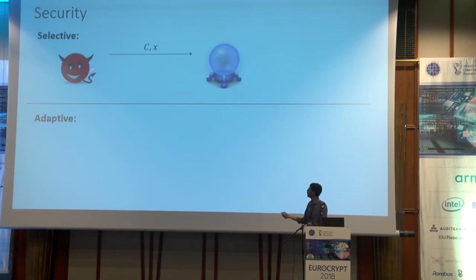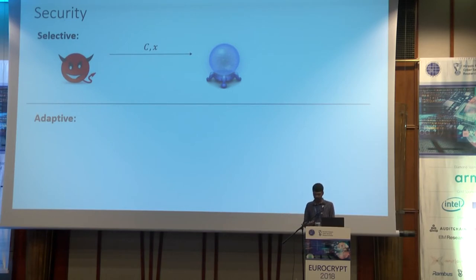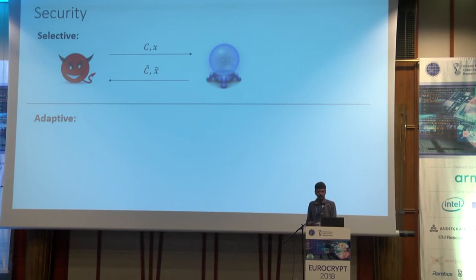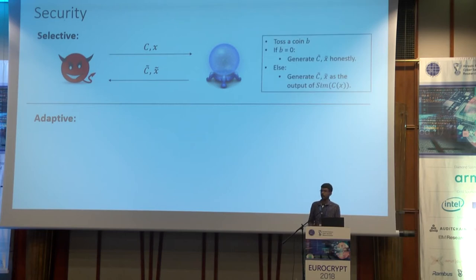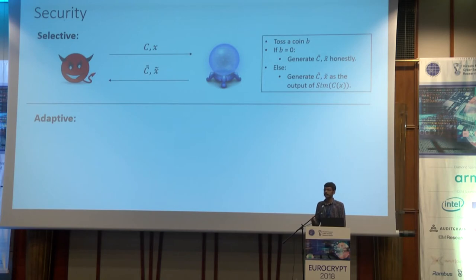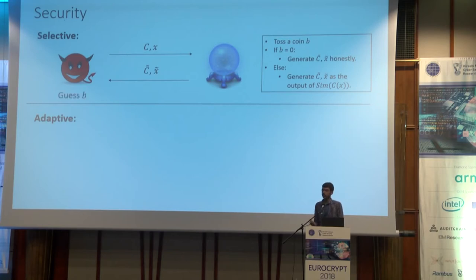It's modeled as a game between an adversary and a challenger. The adversary first commits to the circuit C and input X to the challenger, and gets C-tilde and X-tilde in return. The challenger tosses a random coin B. If the output is zero, it generates C-tilde and X-tilde using the honest algorithms. Otherwise, it generates C-tilde and X-tilde as the output of a simulator given only C as input. The goal of the adversary is to guess this bit B.